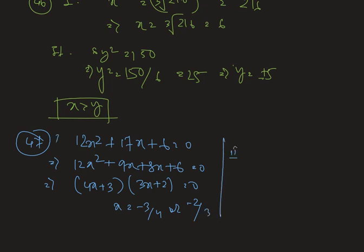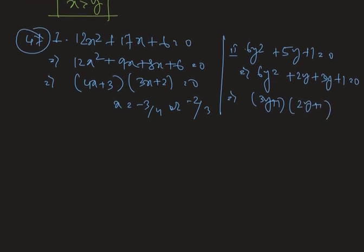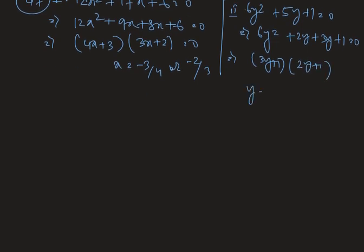From equation 2, we get 6y² + 5y + 1 = 0. Factorizing, we get 6y² + 2y + 3y + 1 = 0, giving factors (3y + 1)(2y + 1) = 0. Hence y = −1/3 or y = −1/2. Comparing the values, x is clearly less than y here.